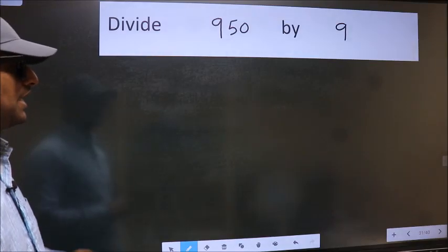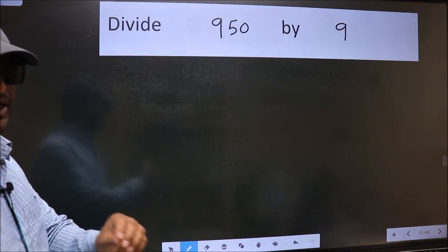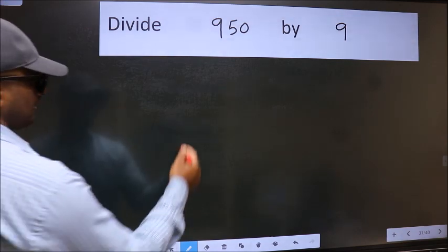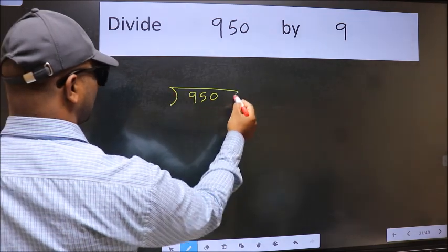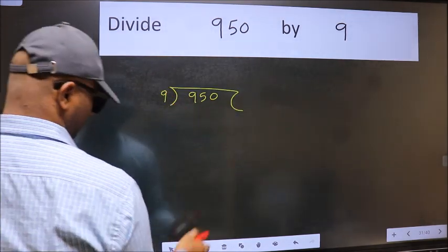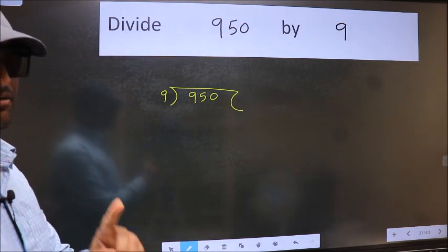Divide 950 by 9. To do this division, we should frame it in this way. 950 here and 9 here. This is your step 1.